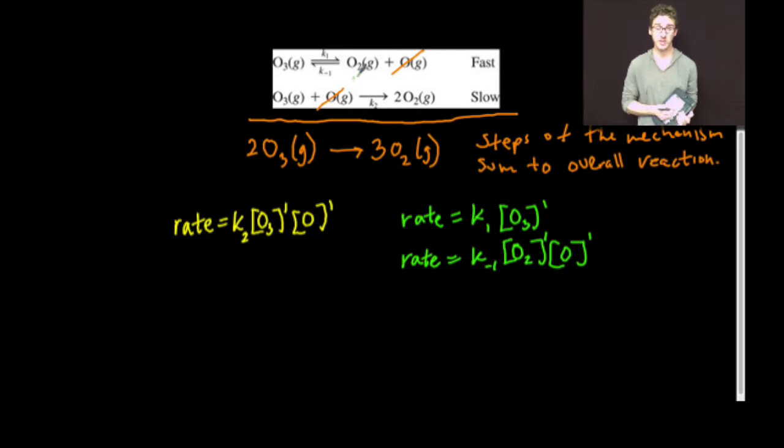Now, because this is a fast equilibrium, by definition, the rate of the forward and reverse reactions are the same when equilibrium is reached. Therefore, I can set the rate laws of the forward and reverse reaction of that first step equal to one another.